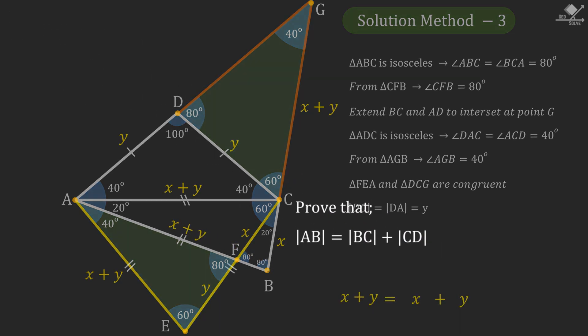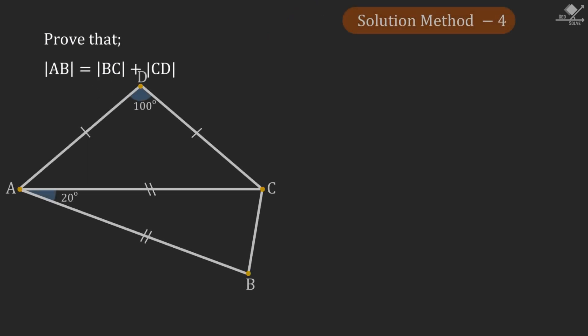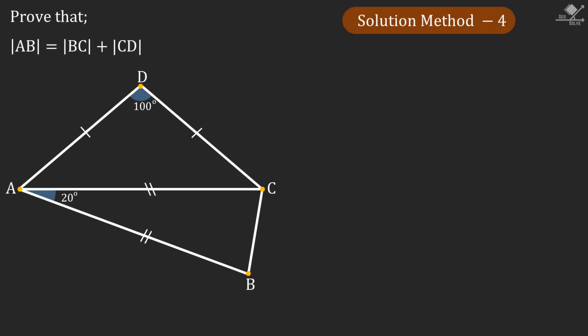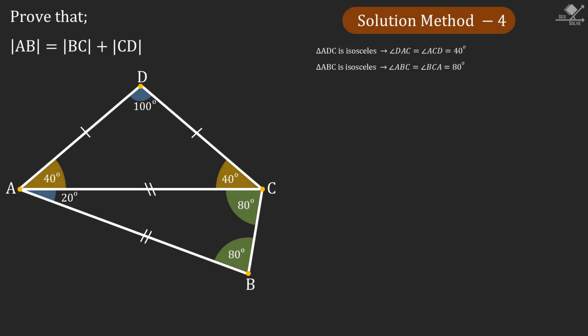Now let's continue with our last method, which will be a trigonometric solution. First let's write down the angles we can calculate using the isosceles triangles. Then let's call the lengths of the line segments as x, y, and z as shown on the figure.